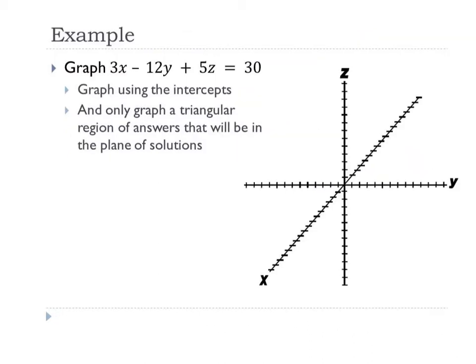We're going to graph 3x - 12y + 5z = 30. And we're going to graph it using the intercepts. And so to find your x-intercept, it's on the x-axis. Well, on the x-axis, y and z are both zero. So if I make y and z both zero, I'm going to get 3x = 30. x is 10. So my x-intercept is 10. You're just going to put a point at 10.